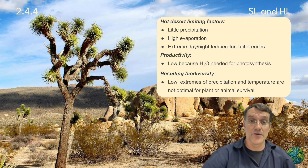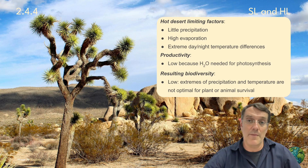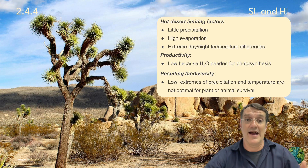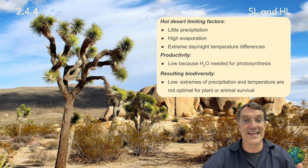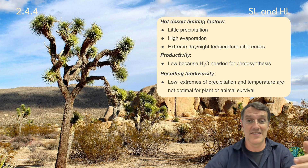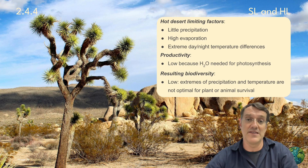Hot deserts present a stark contrast to rainforests. Their primary limiting factors are minimal precipitation, high evaporation rates, and extreme temperature differences between day and night. These conditions severely restrict productivity because water is essential for photosynthesis. The harsh environment results in low biodiversity, as few species can adapt to such extreme conditions.